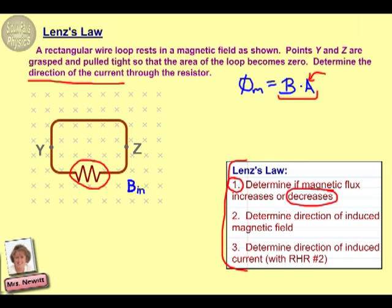Now the next step then is to determine the direction of the induced magnetic field. Remember, for a Lenz's Law problem, you actually have two magnetic fields to consider. One is the magnetic field that is already mentioned in the problem. In this case, that is a magnetic field that already exists. It is into the page.